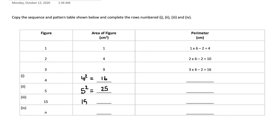15 squared is equal to 225. Now for the nth term — the nth term normally tells us the rule of the sequence. Here, because we're not given a specific value, the nth term is going to be n squared. So any term we want to find, all we need to do is substitute it for n.